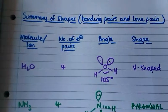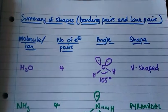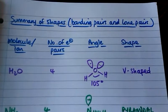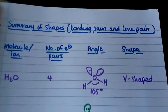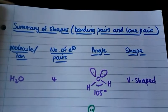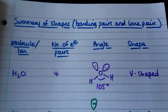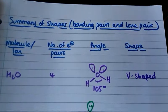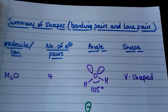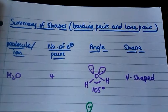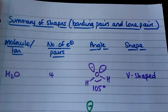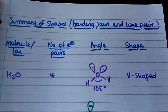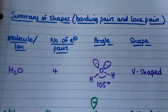When we're dealing with molecules that have both bonding pairs and lone pairs of electrons involved — for example, water has four pairs of electrons: two of them are bonding pairs and two of them are lone pairs — and that has a bond angle of 105 degrees and that's called v-shaped.